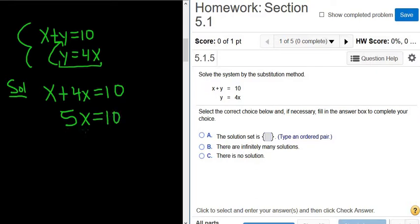Then we'll divide by 5. So x equals 2. That's the x-coordinate of our solution. I'm going to put it in a box.